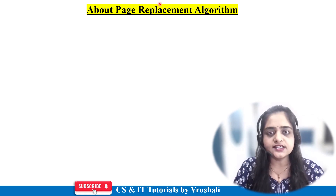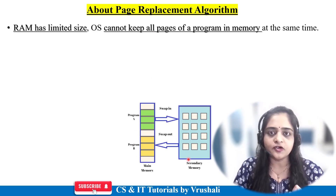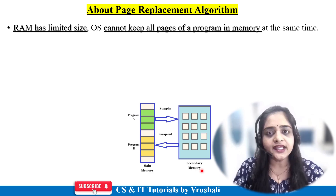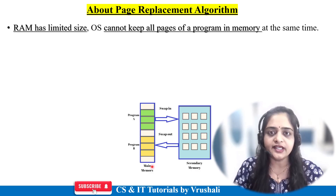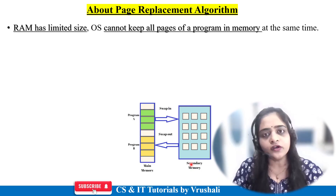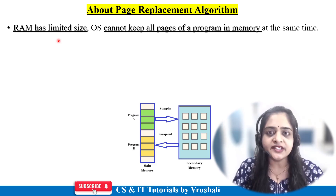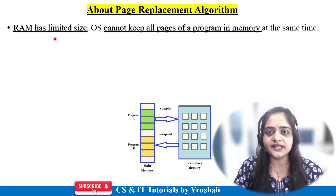First, let's discuss what exactly a page replacement algorithm is. As discussed earlier, in an operating system there are two types of memory: primary memory and secondary memory. Primary memory means RAM — random access memory in your system. RAM has a limited size, like 8 GB, 16 GB, or 32 GB in your mobile or system.